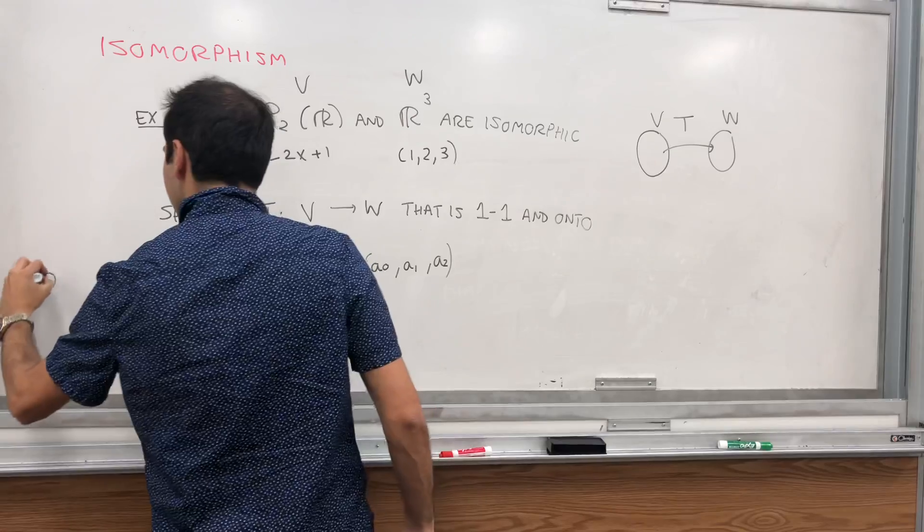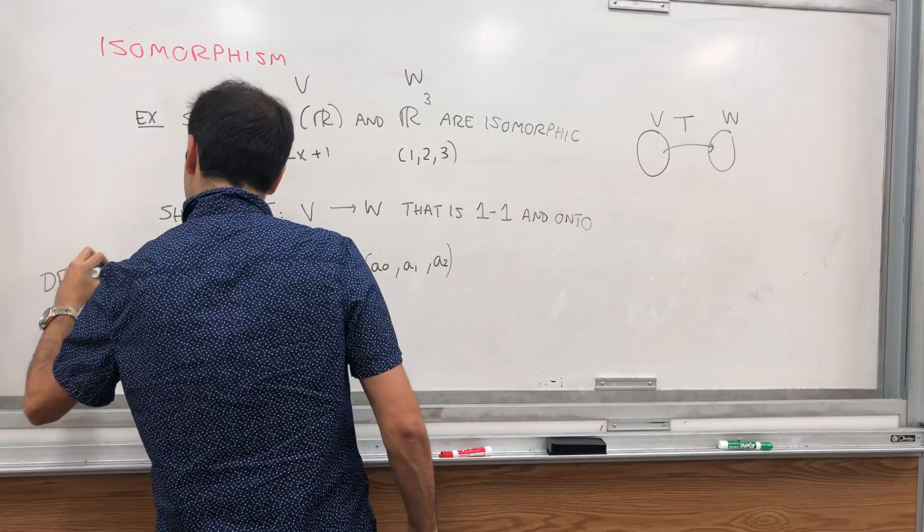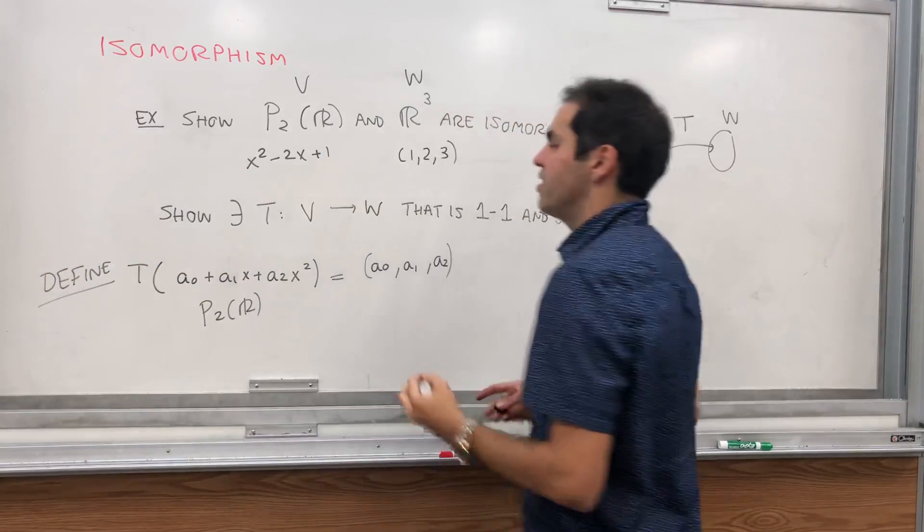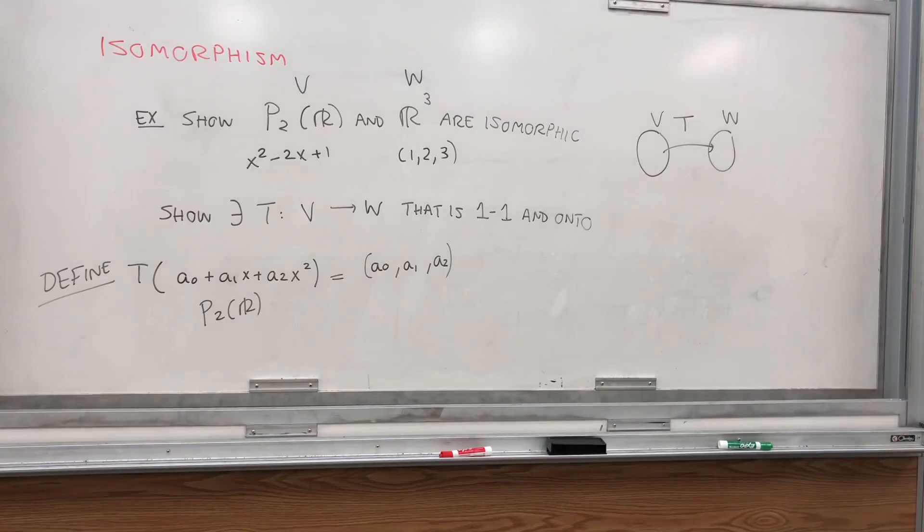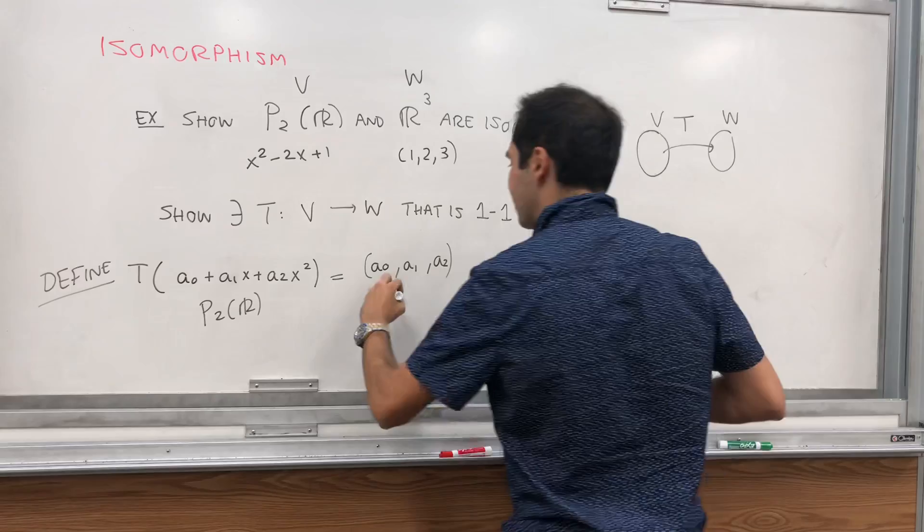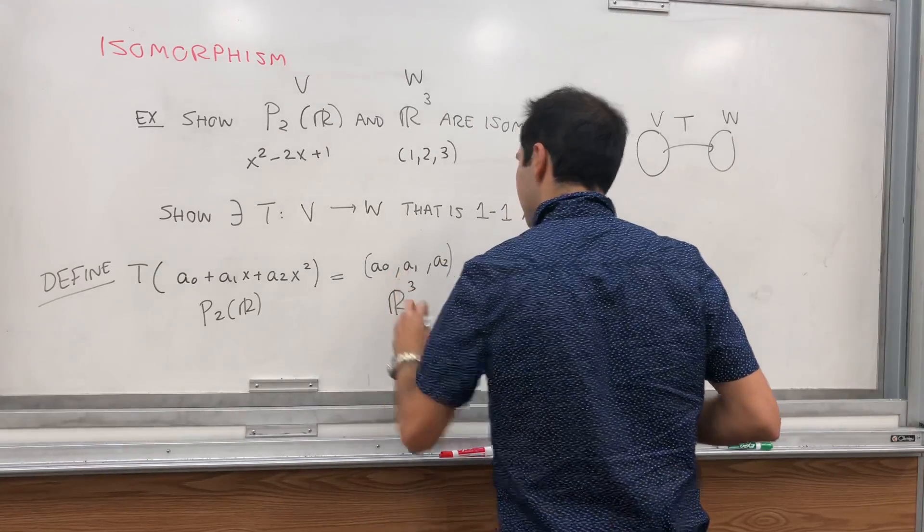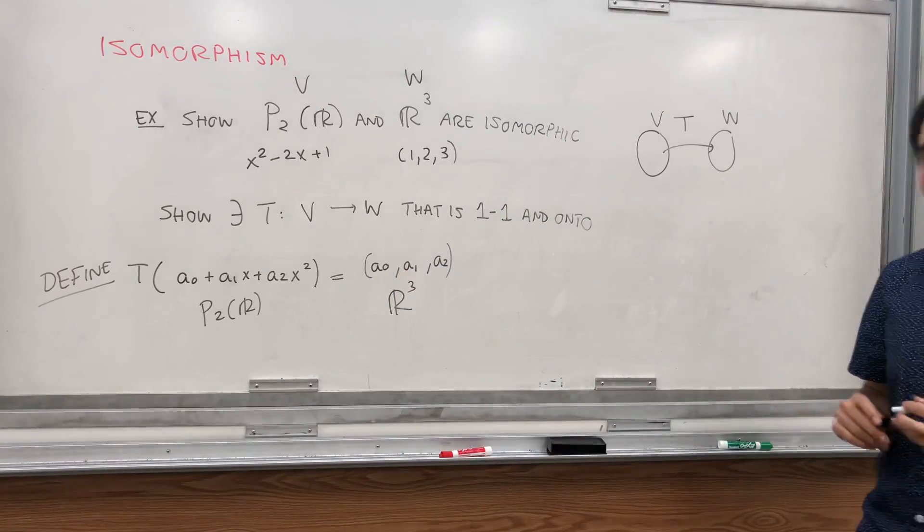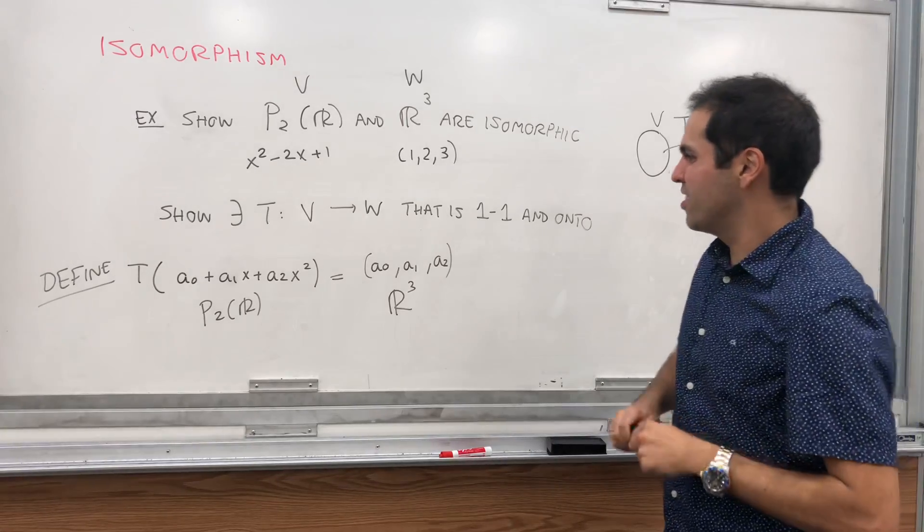So define T to be this way. T of a polynomial of degree less than or equal to 3 gives you this vector in R3. There are other ways also, by the way, so isomorphisms are not unique.